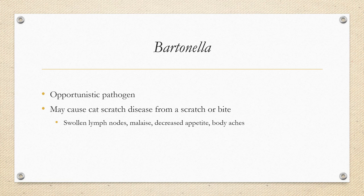Bartonella is an opportunistic pathogen naturally occurring in humans, mammals, and some wild animals. It can cause cat scratch fever, transmitted by cats, or trench fever, transmitted by the body louse. Symptoms of Bartonella infection include low-grade fever, very enlarged lymph nodes, and a pustule at the infection site.